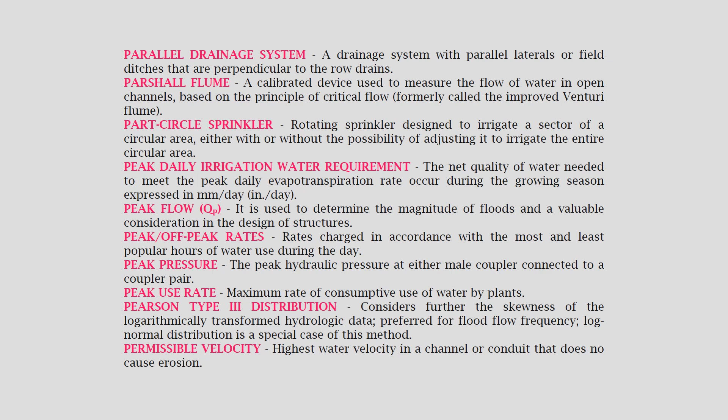Pearson Type 3 distribution: considers further the skewness of the logarithmically transformed hydrologic data, preferred for flood flow frequency. Log normal distribution is a special case of this method. Permissible velocity: highest water velocity in a channel or conduit that does not cause erosion.